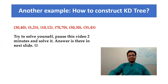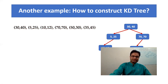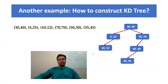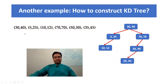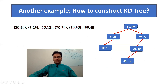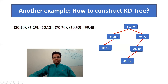Let me explain in short how this next example came. Start from (30, 40) as the root. Take (5, 25) — compare 5 with 30: 5 is less than 30, so come to the left side. Then (10, 12) — compare 10 with 30: 10 is less than 30, come to the left side. But the left side already has data (5, 25). Compare y this time: 12 and 25 — 12 is less. So (10, 12) comes to the left child of (5, 25).